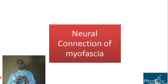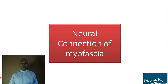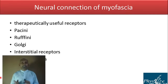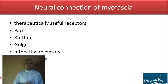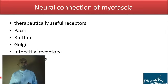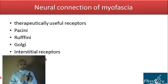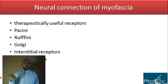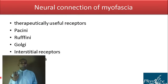Now we'll see the neural connection of myofascia. Our body suit has two types of receptors: mechanoreceptors and nociceptors — pain receptors. To remember them, use the acronym GRIPP: G for Golgi tendon organ, R for Ruffini, I for interstitial receptors, P for Pacinian corpuscle, and P for pain receptor.